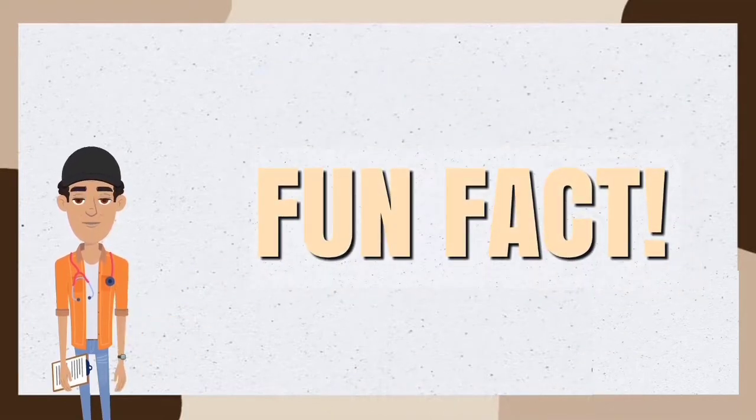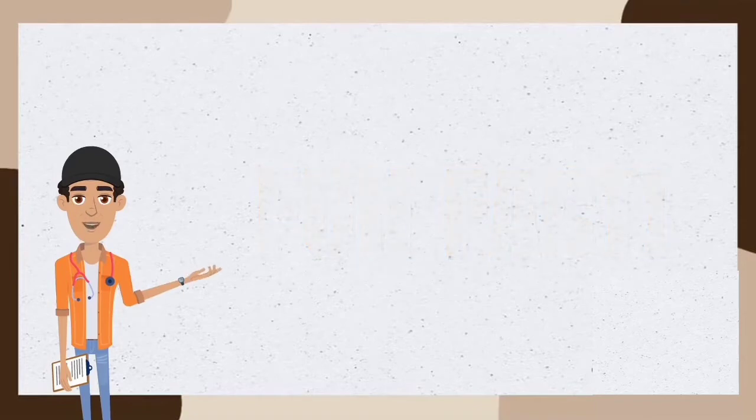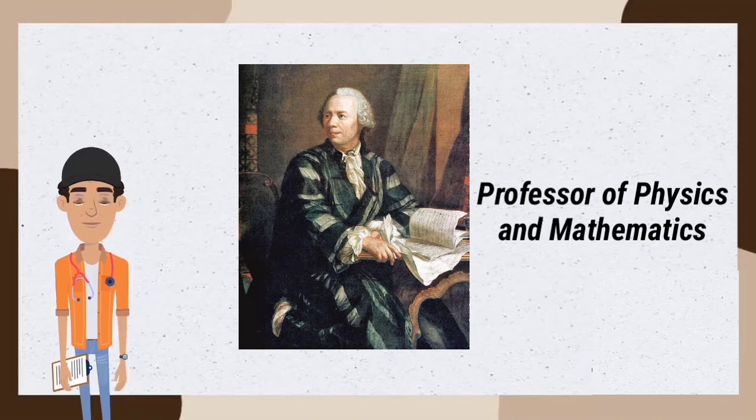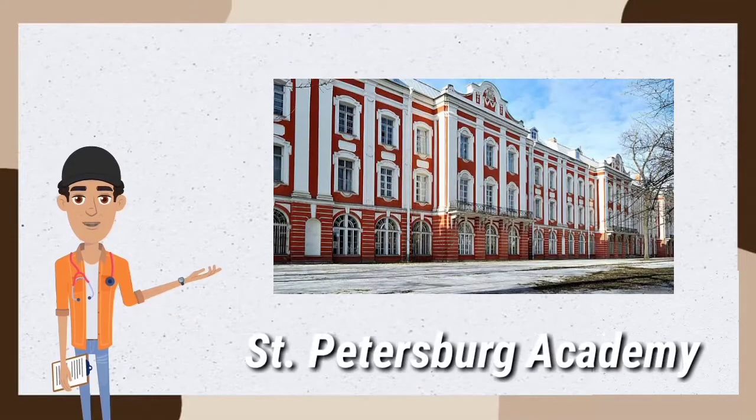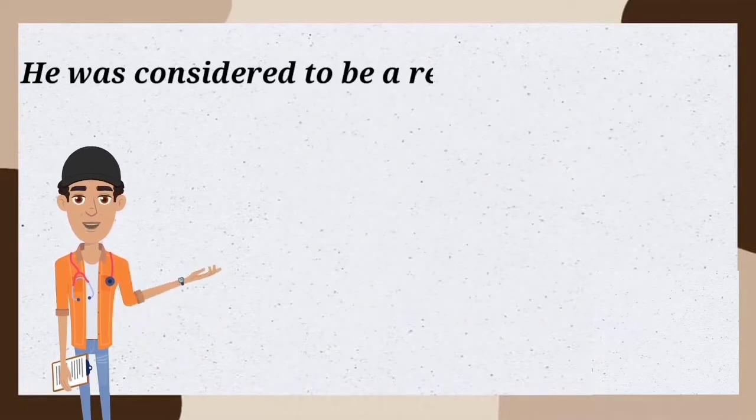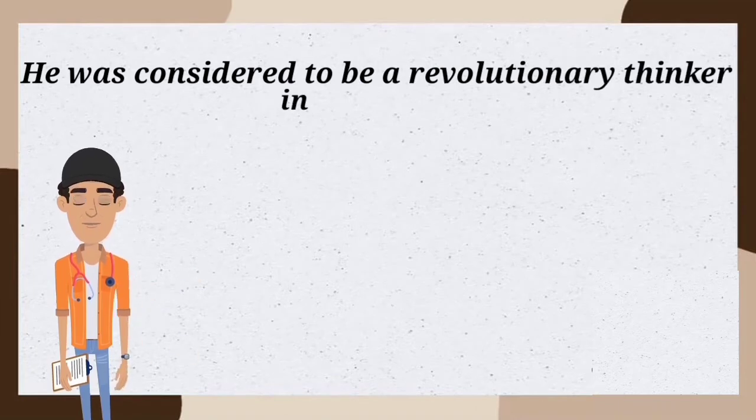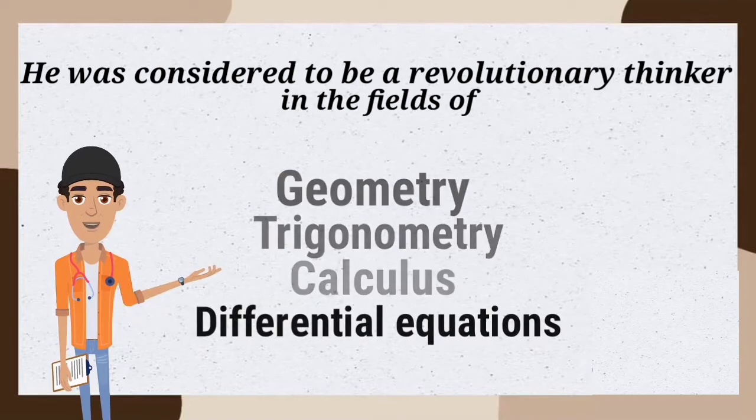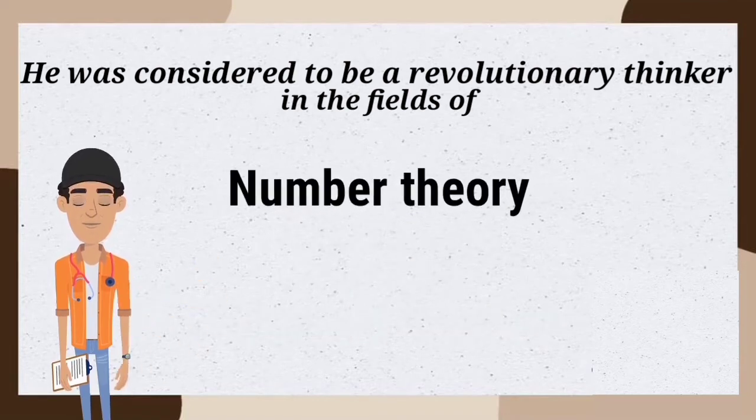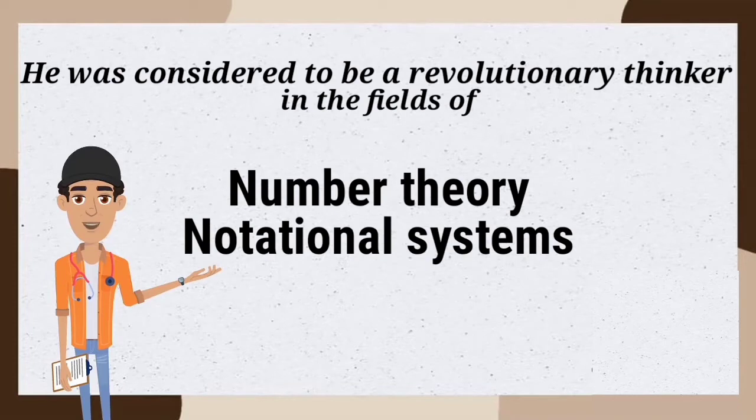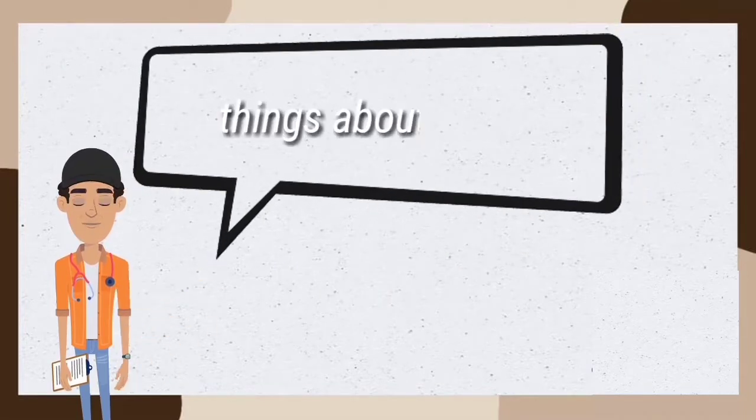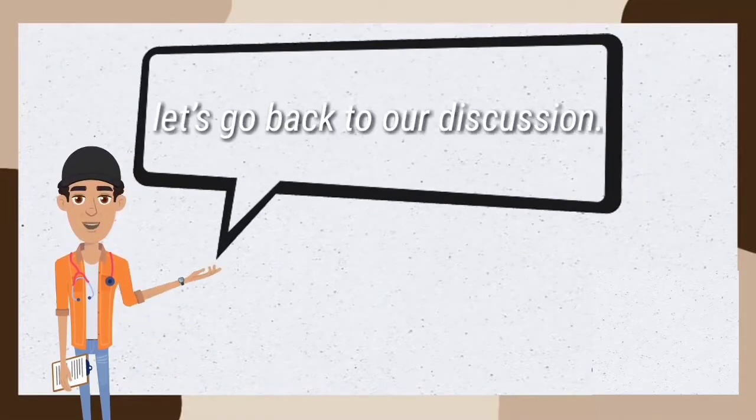And a fun fact: after he returned to Russia, he served in the Navy before he became a professor of physics and later mathematics at St. Petersburg Academy. He was considered to be a revolutionary thinker in the fields of geometry, trigonometry, calculus, differential equations, number theory, and notational systems, including the utilization of pi and f(x), among a legion of other accomplishments. Now that we know a few things about Euler, let's go back to our discussion.